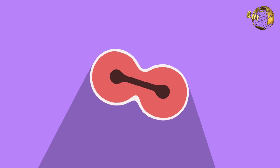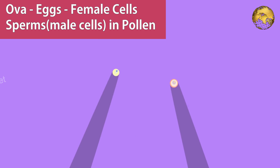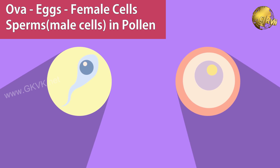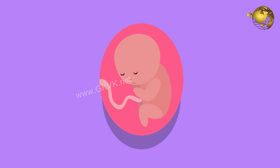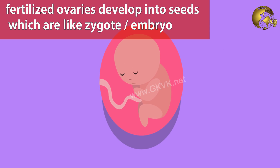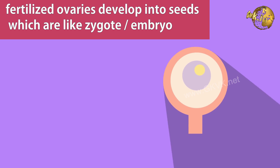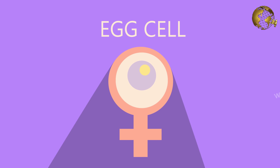Plants reproduce using eggs and sperms, just like humans and animals. Male plants release pollen grains which fertilize the ovaries. The fertilized ovaries develop into seeds, which are like zygotes and embryos, which are either dispersed naturally by wind or by animals, or if planted into soil by humans, grow into new plants.